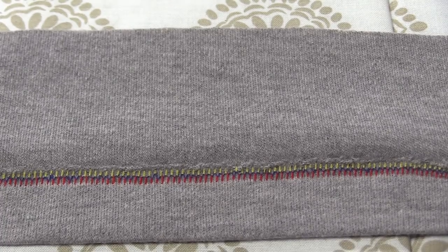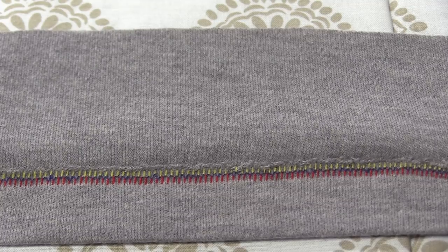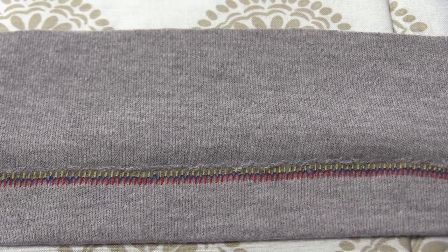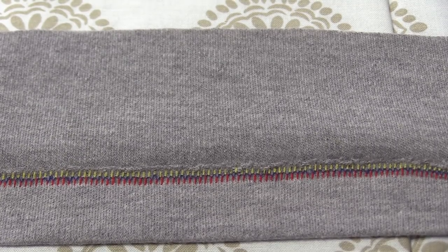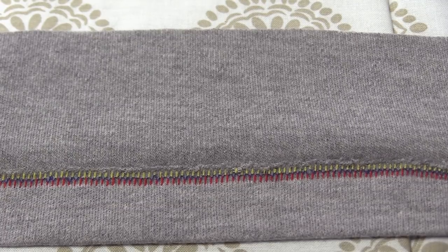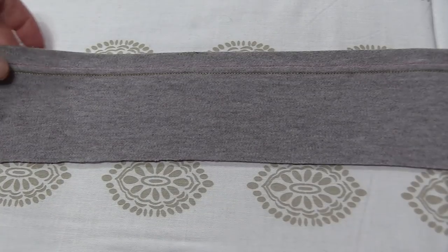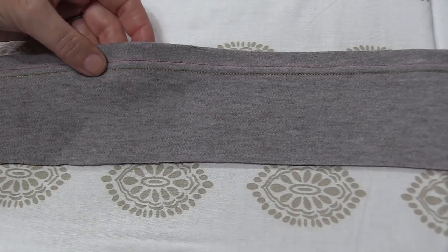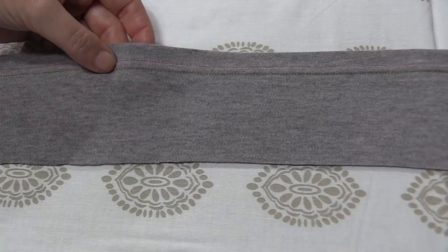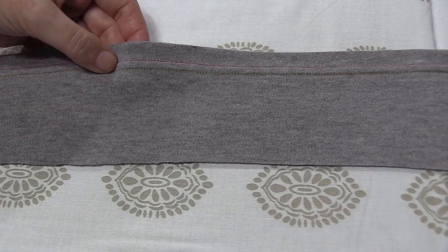Now it doesn't look exactly like the back side of a t-shirt from the store, but it is a nice clean finish. It does encase that raw edge on the back side and give you that double line of stitching on the front. This is the easiest way that I have found to get a nice clean hem when working with knit fabric if you don't have a serger or a cover stitch machine.